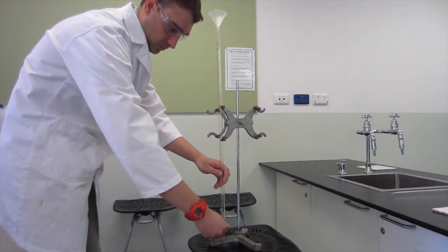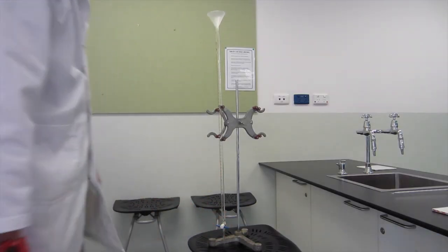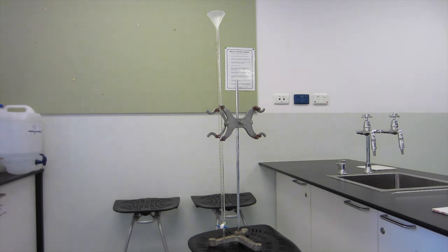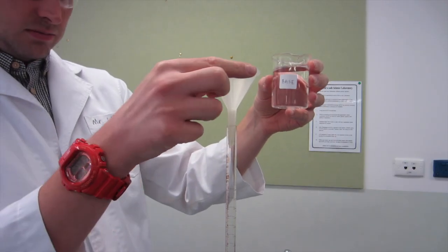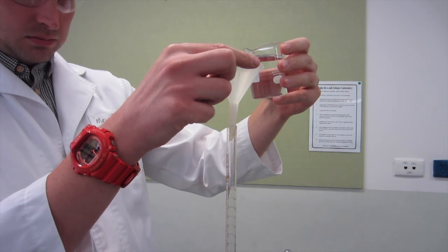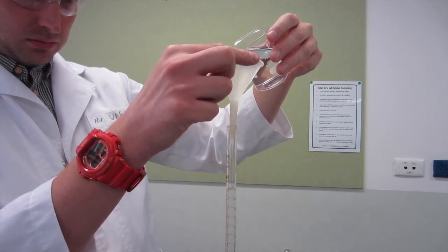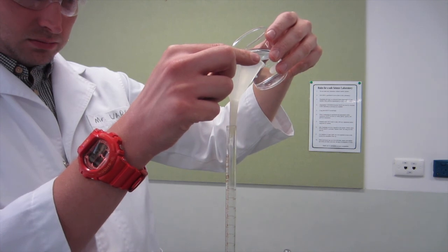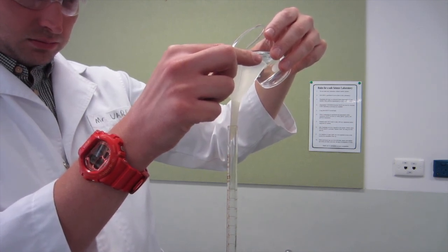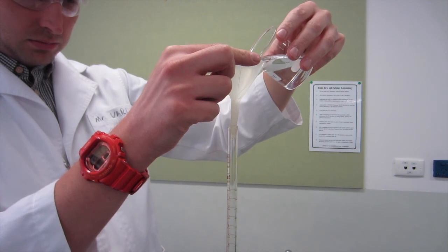First we need to fill our burette. Make sure the stopcock down the bottom is closed and you've placed a funnel in the top of the burette. We're assuming the burette is already being rinsed with the solution we're using, in this case it's base. Gently lift the funnel to allow air to flow in and out. Slowly tip in your solution into the burette using the funnel to guide it in. You fill up until you get to around about 5 mils in the burette.